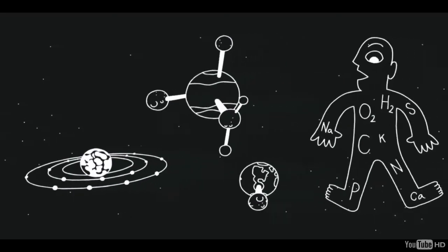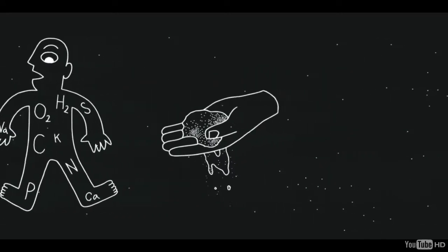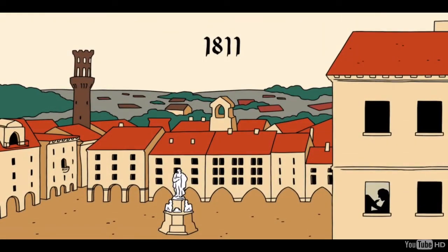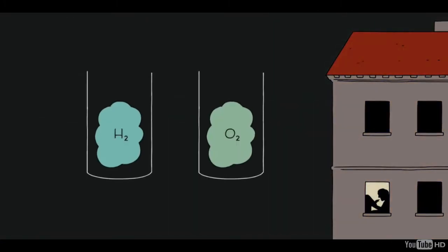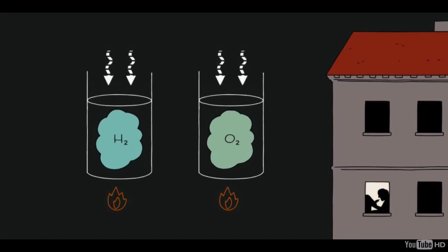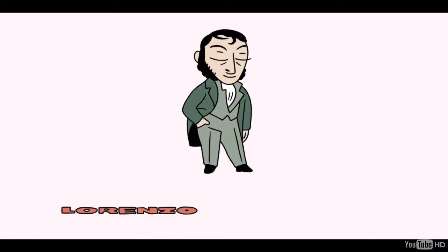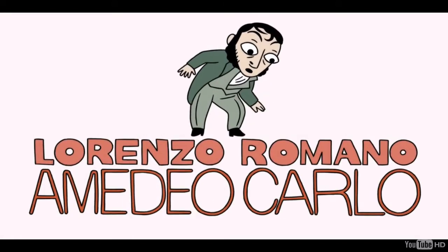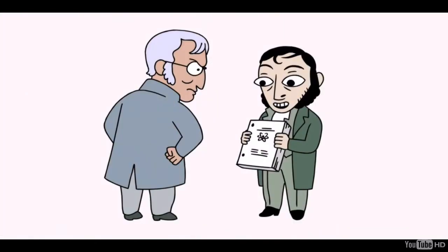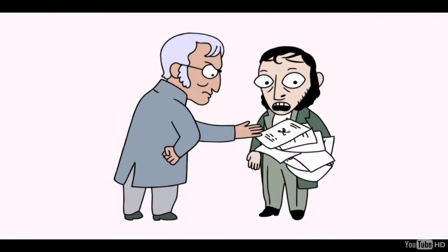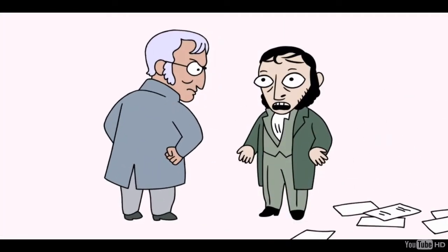Have you ever wondered how many atoms there are in the universe, or in your body, or even a grain of sand? Scientists have wanted to answer that question, but how do you count something as small as an atom? Well, in 1811, someone had an idea that if you have equal volumes of gases at the same temperature and pressure, they would contain an equal number of particles. His name was Lorenzo Romano Amadeo Carlo Avogadro. Unfortunately for Avogadro, most scientists didn't accept the idea of the atom and there was no way to prove he was right.